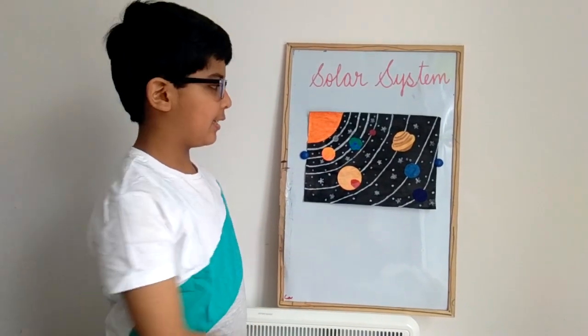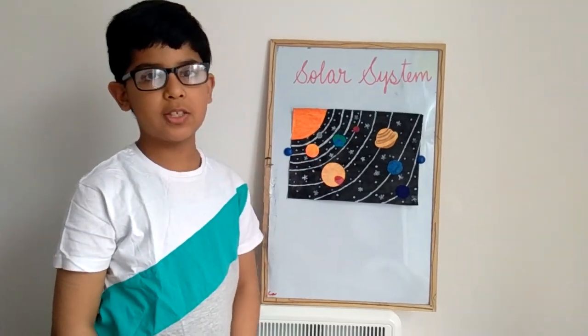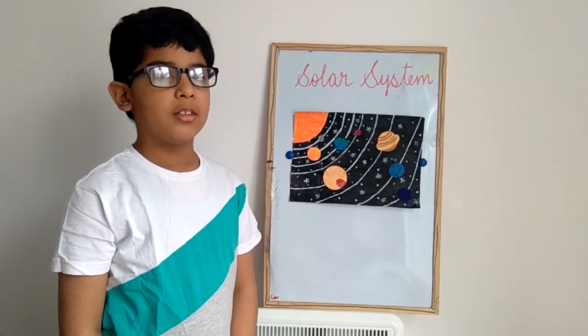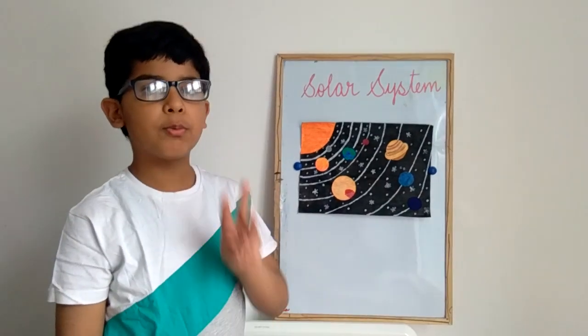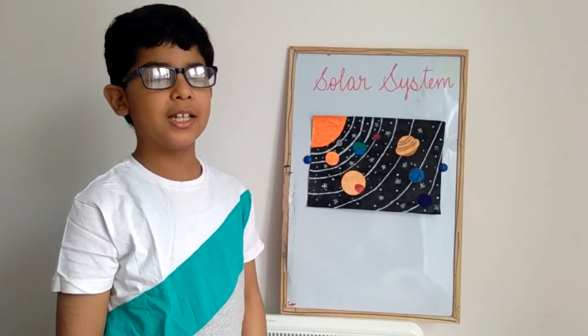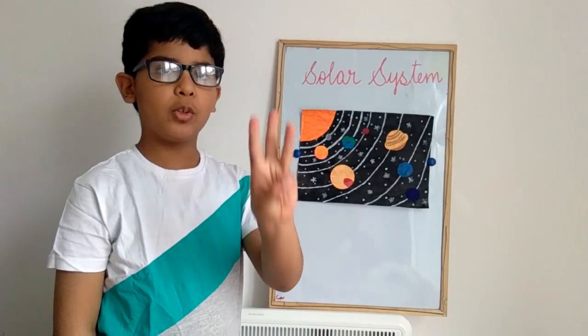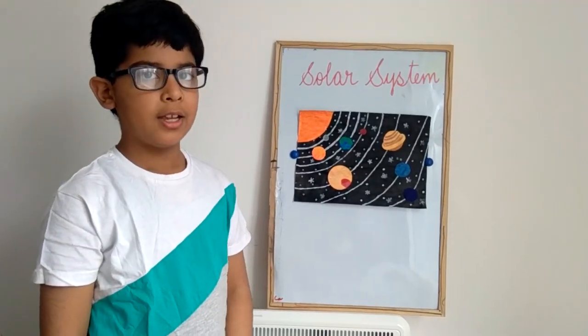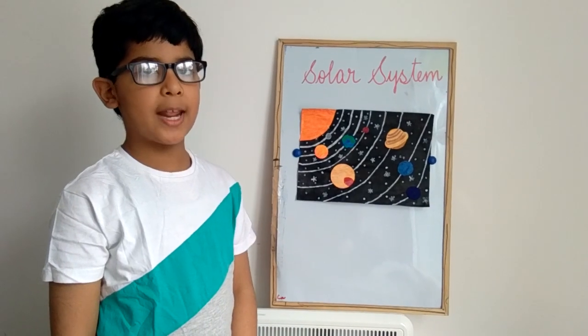The sun and these eight planets make up our solar system. There are three types of planets: inner planets, outer planets, and dwarf planets. There are three dwarf planets: Eris, Ceres, and Pluto.